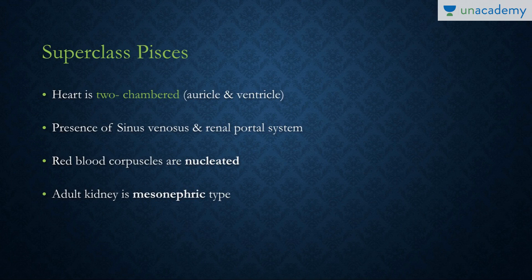The two-chambered heart leads to mixing of oxygenated and deoxygenated blood. There is a presence of sinus venosus and a renal portal system. The renal portal system is a portal system that connects the alimentary canal and the kidney, helping in removal of waste from the blood.